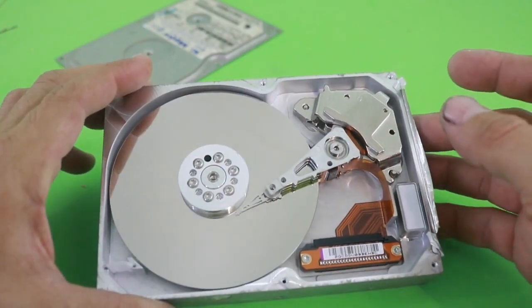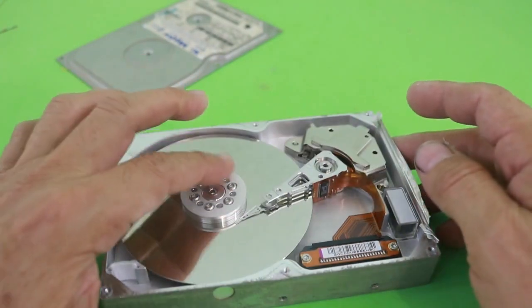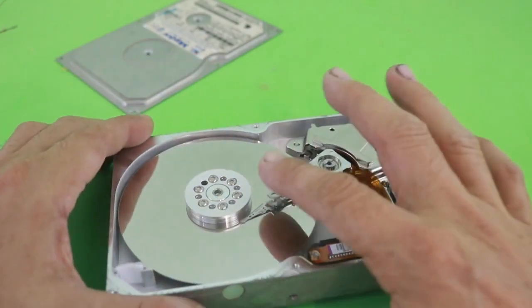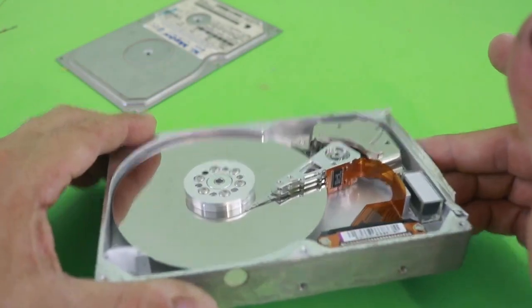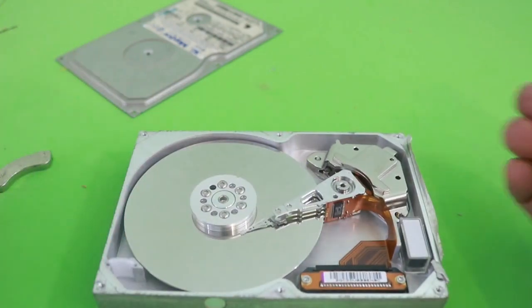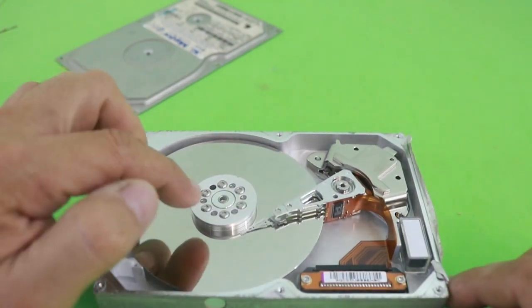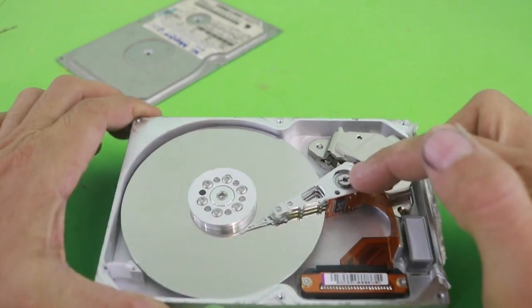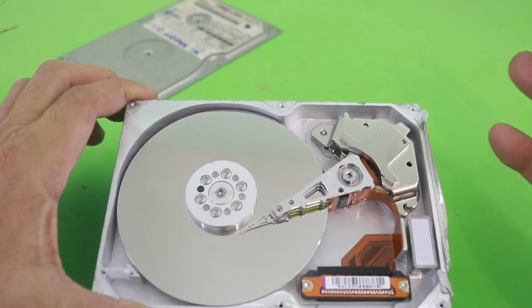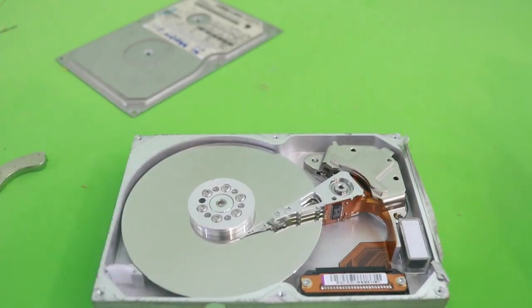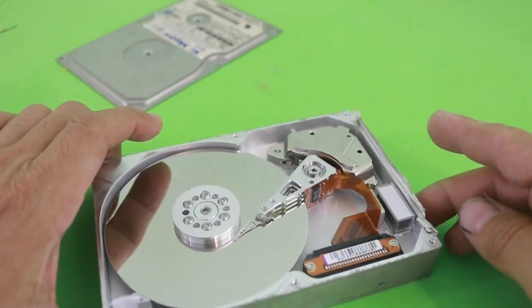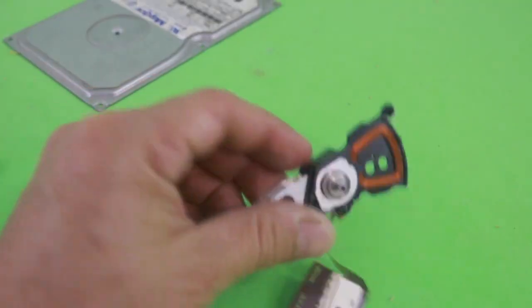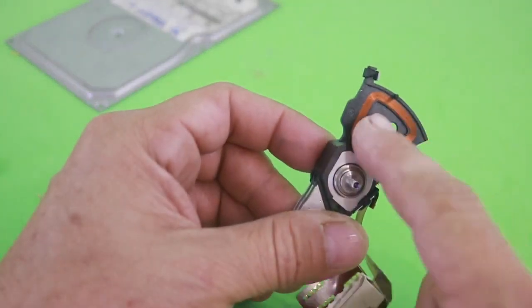Of course you can also use the electric motor and the plate which has a mirror finish, and also the bearings. The ball bearings here in the model and also in the coil arm are of very high quality and are useful for different projects.